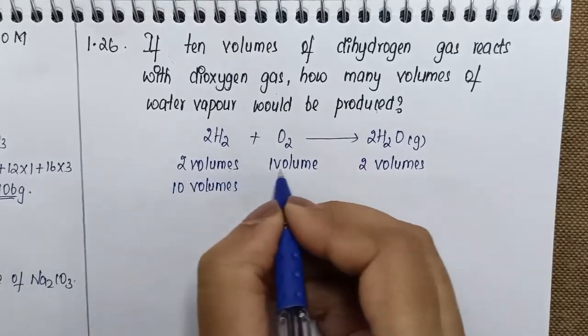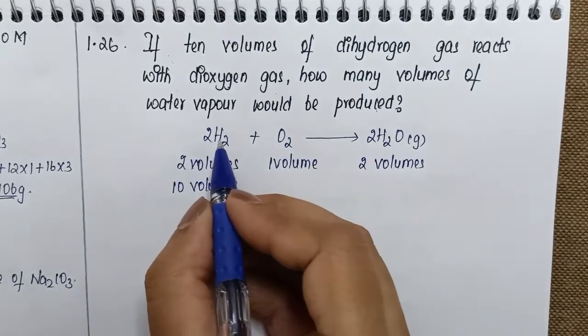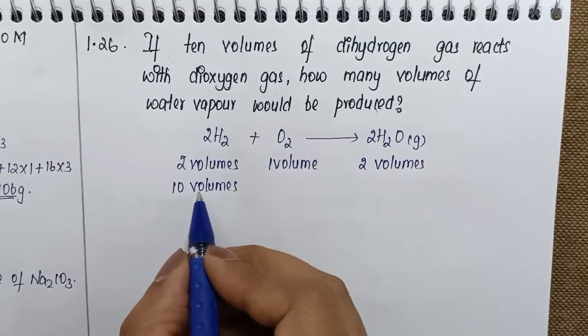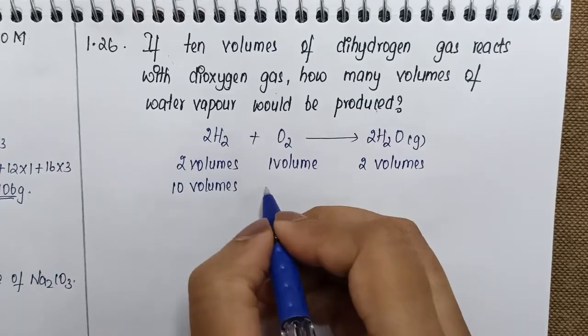In the previous equation, if two volumes of dihydrogen was there, half that value only you will get for oxygen. So if here you have 10 volumes, this has to be 5 volumes.